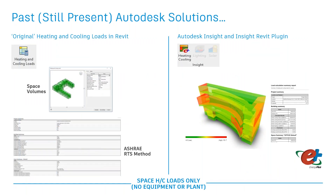Autodesk has a long history in this area, going back to the original heat and cooling load tool in Revit — about 14 years old — which was actually the start of the whole effort around GBXML with Revit. That still exists today but is limited in geometry and uses a gradient time series method. More recently, with Autodesk Insight and the Insight Revit plugin, we used EnergyPlus for heating and cooling load calculations. The key limitation with both was that there was no equipment or plant in the equation. This new systems analysis feature essentially overrides the need for these.